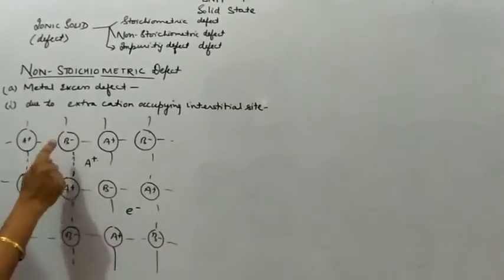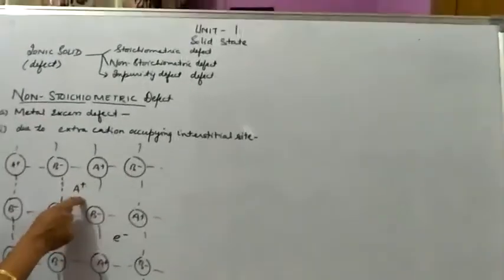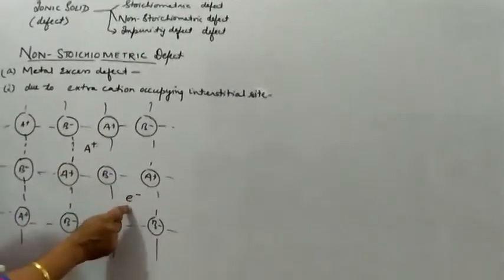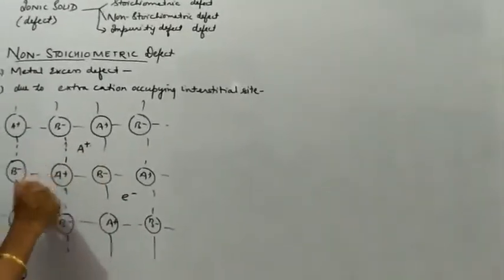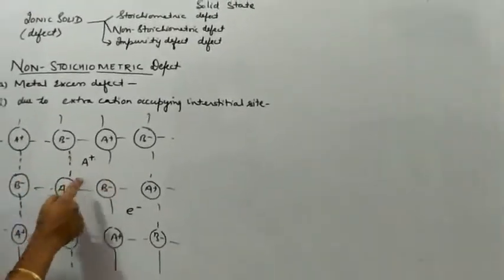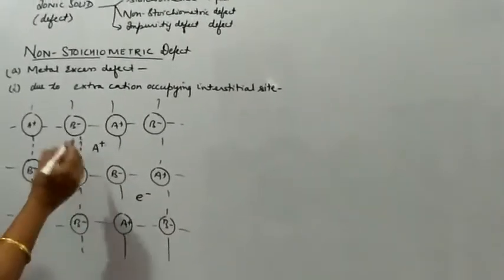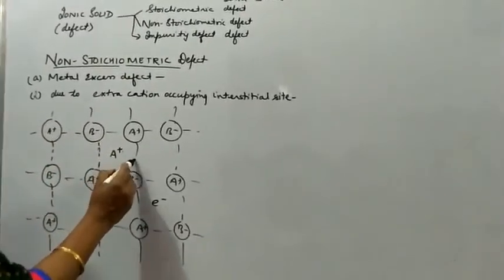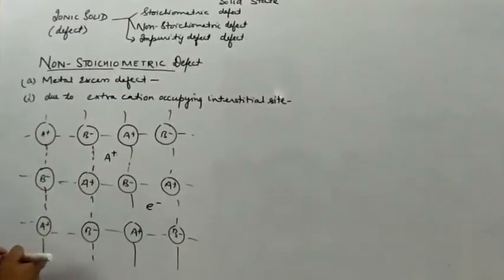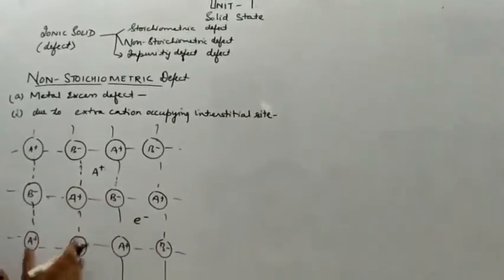The A+ cation comes from the metal atom which is leaving its lattice site. The electron it leaves behind will occupy a nearby interstitial site. This occurs only when the solid is heated — the metal atom leaves its lattice site and releases an electron due to heating.